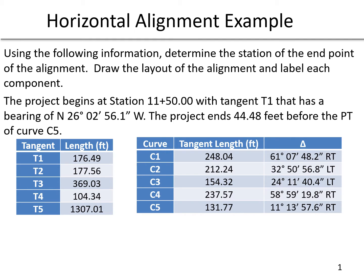We are told that the project begins at station 11 plus 50 and starts with tangent T1. We have a table for our tangents, and that starting tangent has a bearing of north 26 degrees 2 minutes 56.1 seconds west. We're also told that the project ends 44.48 feet before the PT of curve 5 — that's our second table, the curve table.